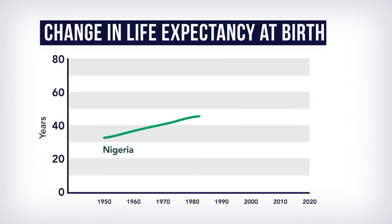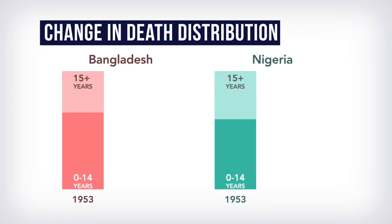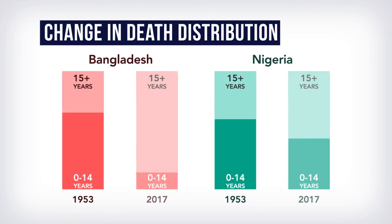Along with decreasing child mortality, life expectancy in both countries has increased as well. In 2017, the average person will live 33 years longer in Bangladesh and 20 years longer in Nigeria compared to the 1950s. By looking at deaths by age group, we can see life expectancy in Bangladesh has increased due to the substantial decline in child mortality, while in Nigeria, more than 40% of all deaths still occur before age 15.